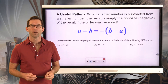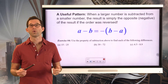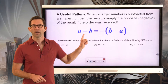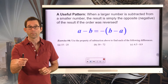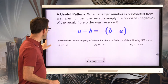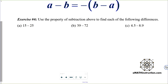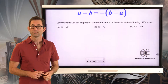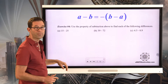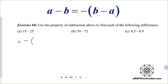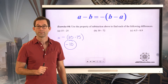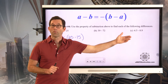A useful pattern: when a larger number is subtracted from a smaller number, the result is simply the opposite — the negative — of the result if the order was reversed. In symbolic form, a minus b equals the negative of b minus a. That's how we subtract a larger positive from a smaller positive. For example, 15 minus 25 would be identical to the negative of 25 minus 15. Since 25 minus 15 is 10, then 15 minus 25 is negative 10.